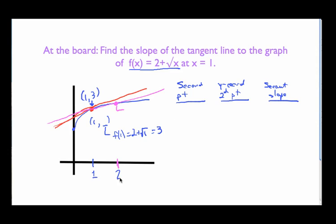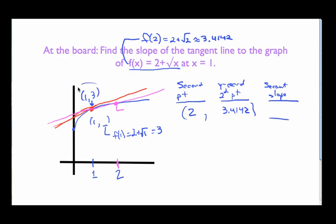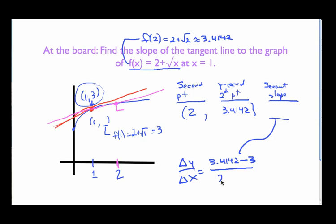Let's start with something simple off to the right, like x = 2. The y-coordinate is f(2) = 2 + √2, which is about 3.4142. The slope of the secant line is the rise over run: the change in y is 3.4142 − 3, and the change in x is 2 − 1, giving a secant line slope of about 0.4142. That's the first entry in the table.